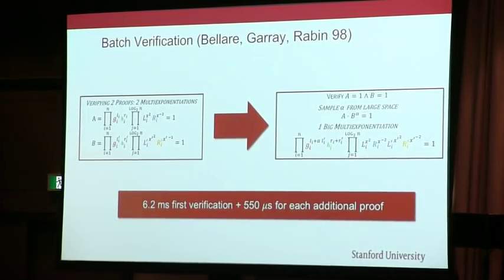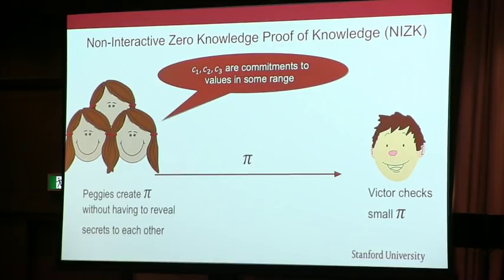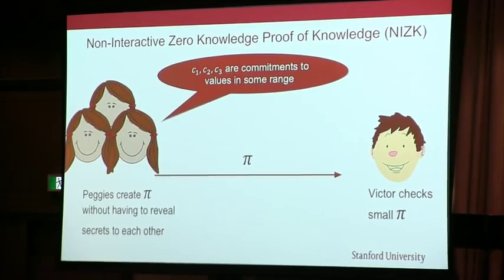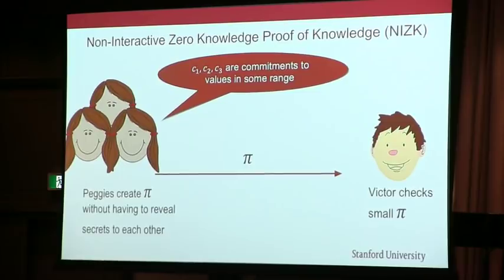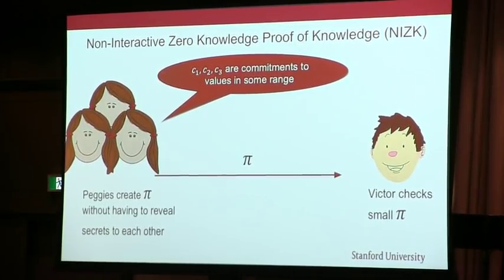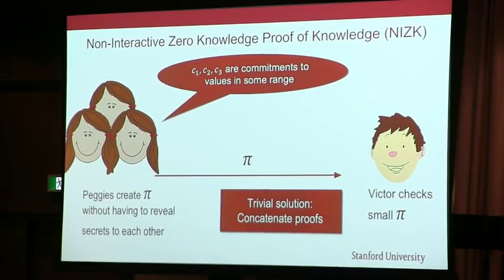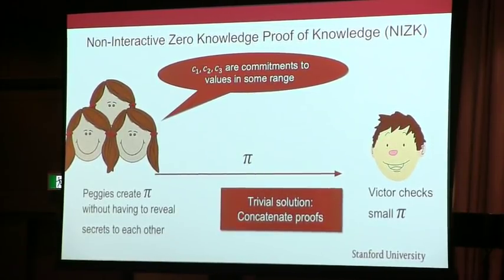Bulletproofs have logarithmic scaling for proof size, so the bigger the circuit, the more advantage you can take. In a cryptocurrency transaction, there are often many people who want to create a proof. It would be better if they could create one proof together, since that combined proof will be shorter than just concatenating individual proofs. The challenge is doing that without revealing their secrets to each other — they don't want to reveal secret keys or amounts, since the whole idea is to have a privacy-preserving coin.